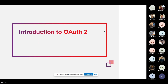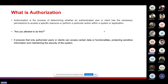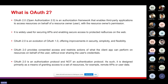Let's start with the introduction to OAuth2, beginning with authorization. Authorization is the process of determining whether an authenticated user or client has the necessary permissions to access a specific resource or perform a particular action within a system or application. Essentially, it asks: are you allowed to do this? It ensures that only authorized users or clients can access certain data or functionalities, protecting sensitive information and maintaining system security.